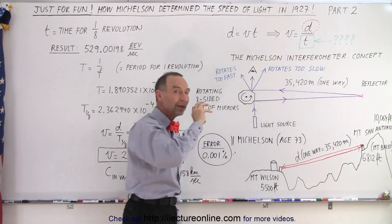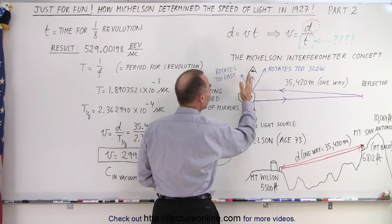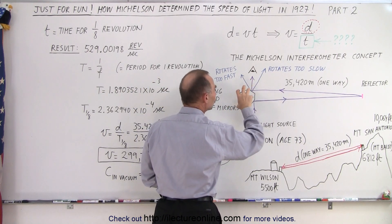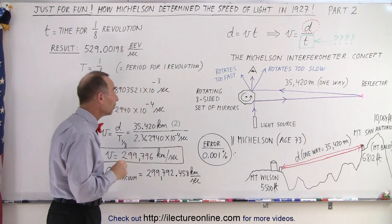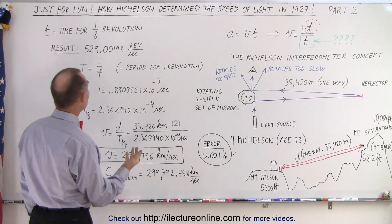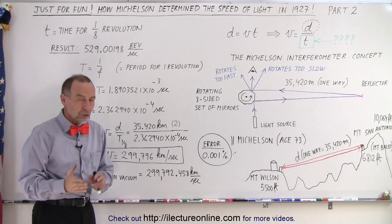So you keep changing the speed of that wheel until you get it just right that the person would see the light coming from there at just the right speed. Once you have determined that, what you need to do then is figure out how long that took, the time for one-eighth of a revolution for the next mirror to be just in the right place to see the reflected light.